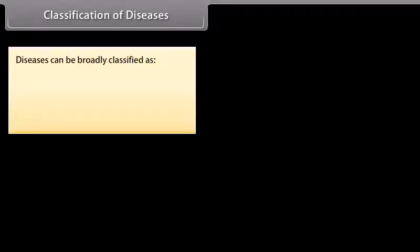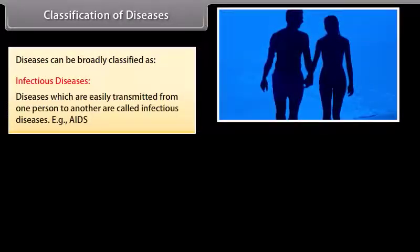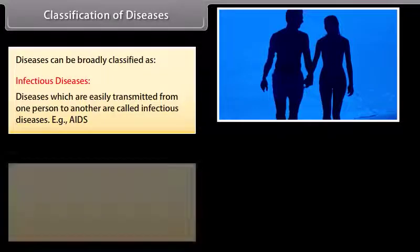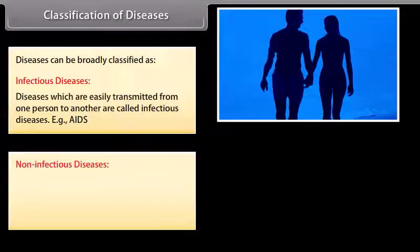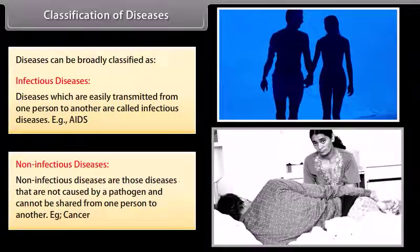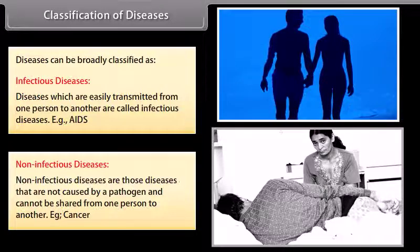Diseases can be broadly classified as infectious diseases and non-infectious diseases. Infectious diseases are easily transmitted from one person to another — for example, AIDS. Non-infectious diseases are not caused by a pathogen and cannot be shared from one person to another — for example, cancer.